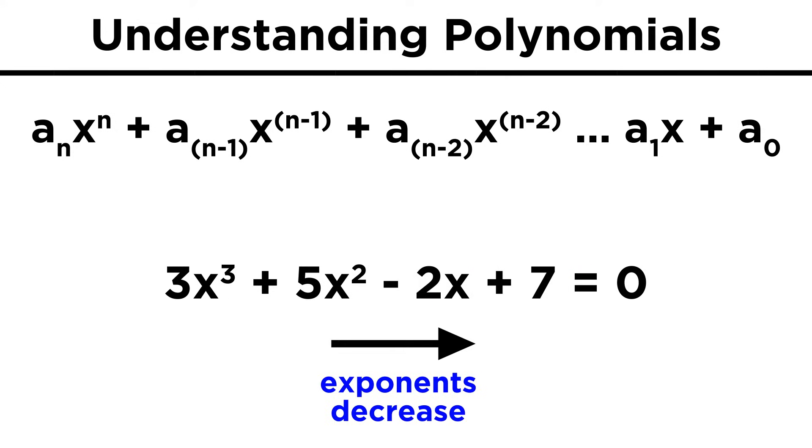As we referenced, it is convention to list the terms in the polynomial by decreasing exponents, so we would say three x cubed plus five x squared minus two x plus seven equals zero in that specific order, and typically not in some other order. Again, there is no firm reason for this, it's just convention.